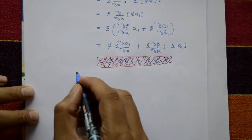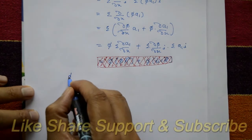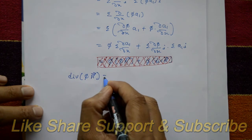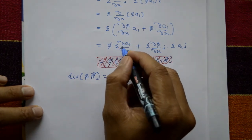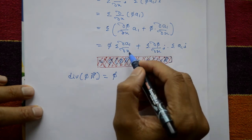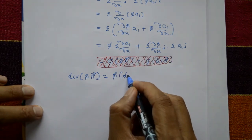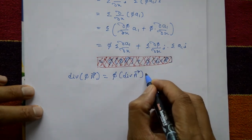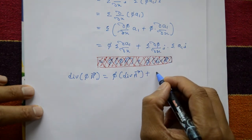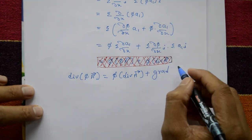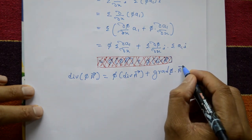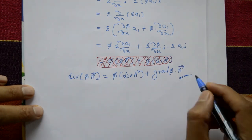So the left-hand side, divergence of φ**A**, equals: the first term φ times (summation of ∂A₁/∂x) which is φ(∇·**A**), plus the second term (∇φ)·**A**, which is the gradient of φ dot vector **A**. This is the required right-hand side, completing the proof.